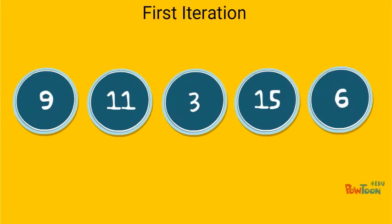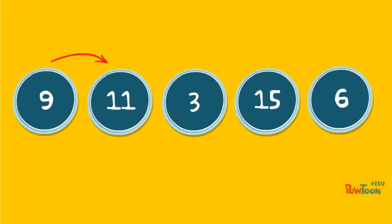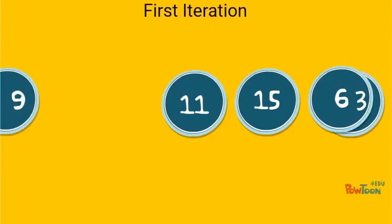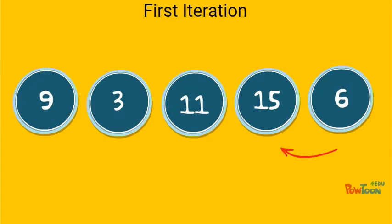So let's look at an example. Suppose we have a list of five numbers: 9, 11, 3, 15, and 6. In the first iteration of our loop, we compare 9 to 11. 9 is less than 11, so we simply move to the next element. Next, 11 is greater than 3, so we swap them. Next, 11 is less than 15, so we move to the next element. And finally, 15 is greater than 6, so we swap them.